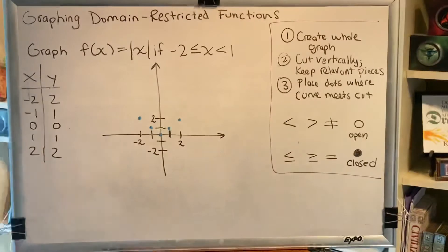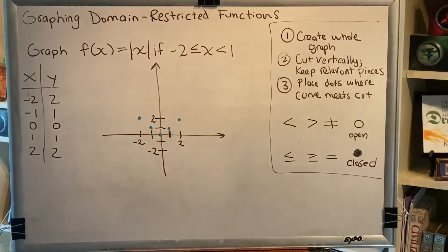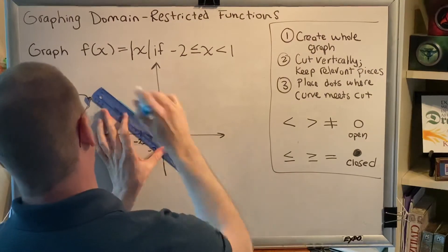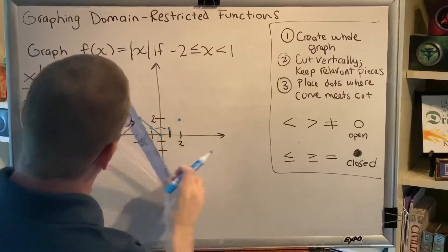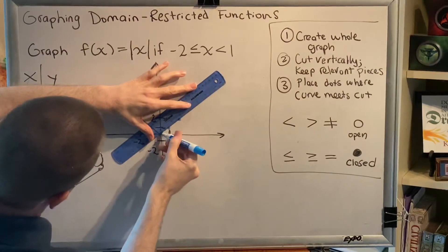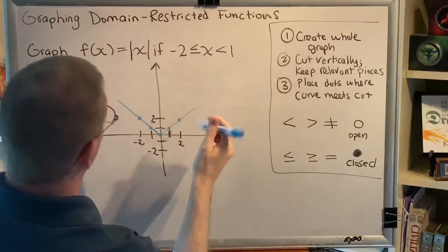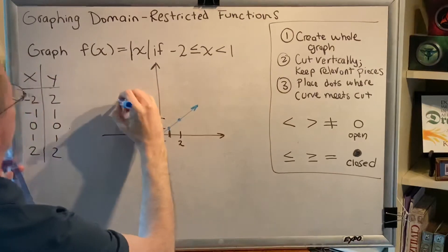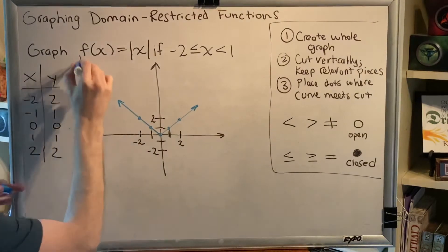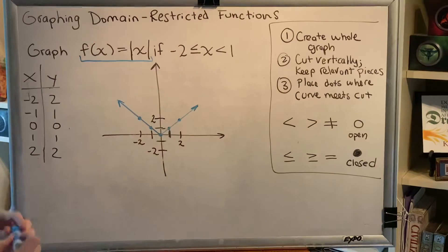So the absolute value graph consists of two rays. Lines, line segments, and rays must be drawn with a straight edge. So get out your straight edge and draw this. All right. So we've now created our entire graph of f of x equals the absolute value of x.